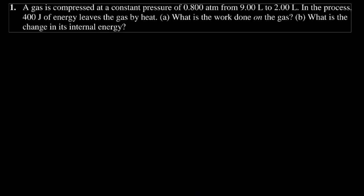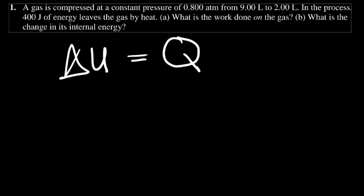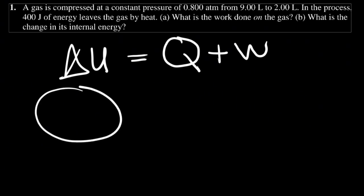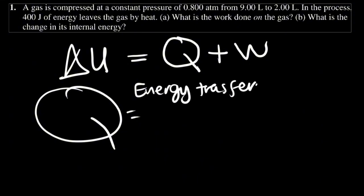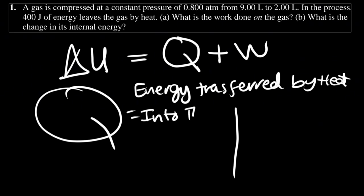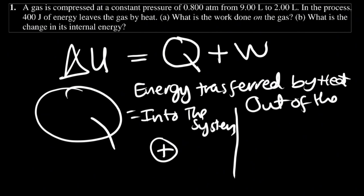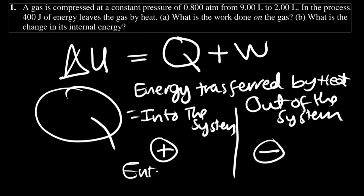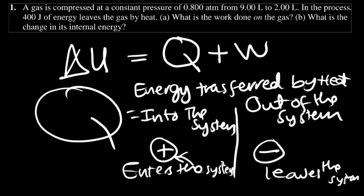The first law of thermodynamics states that the change in internal energy equals the energy transferred by heat added by the work done. Regarding Q, the energy transferred by heat: when energy is transferred into the system, Q is positive; when energy is transferred out of the system, Q is negative.